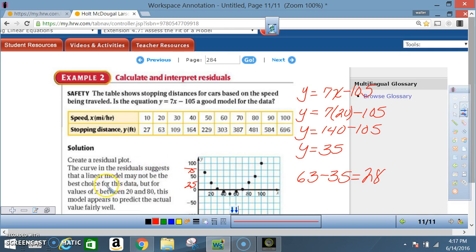The reason they say that the graph is a good choice for the values between 20 and 80 is because if you notice, all these points are very close to the x-axis. Once you start getting up here, it's way out of line. Right here it's predicting pretty accurately based on the residual values.